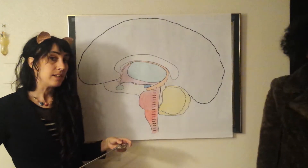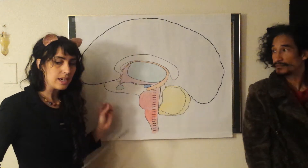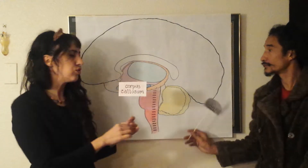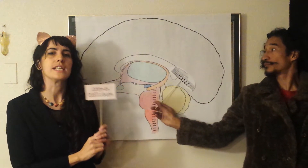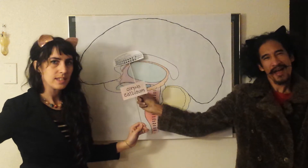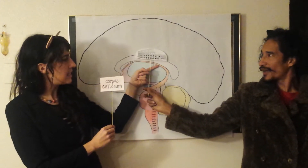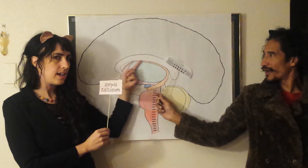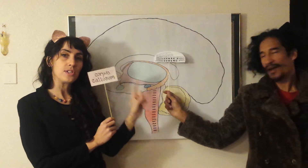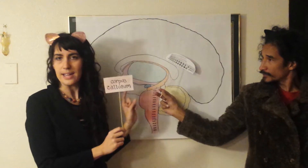Moving on to the more complicated structures of the forebrain: the first thing you might notice is the trusty corpus callosum. It looks like a colosseum surrounding the other parts of the forebrain, and it connects the two hemispheres of the brain, like two gladiators in battle.